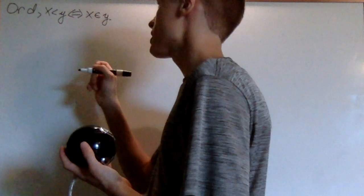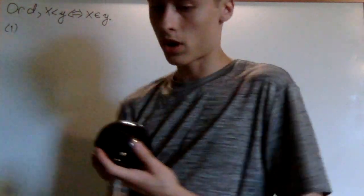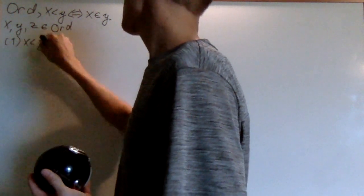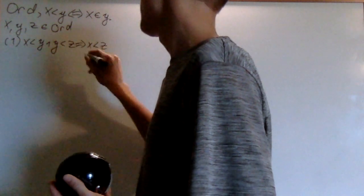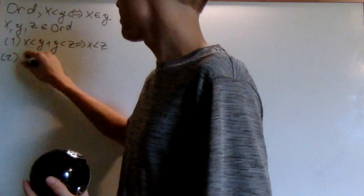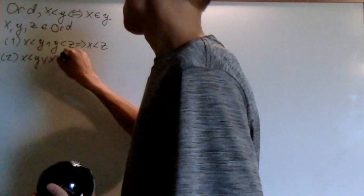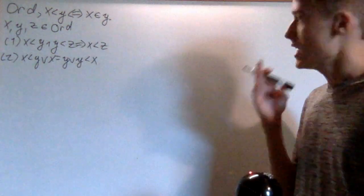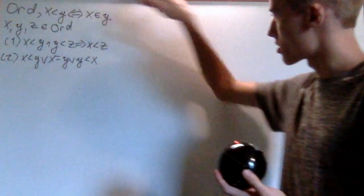There are a couple properties of this order. If I have three elements x, y, and z in Ord: first, if x is less than y and y is less than z, that means that x is less than z. The second condition is that either x is less than y, or x is equal to y, or y is less than x. These are just the properties you want out of an order, and you can check that for the von Neumann ordinals, this is true.